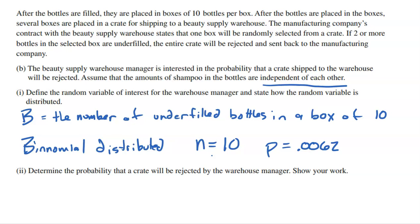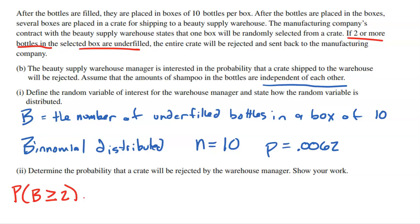Now we determine the probability that a crate will be rejected, which requires P(B ≥ 2). That means finding the probability of 2, 3, 4, 5, 6, 7, 8, 9, or 10 underfilled bottles and adding them all together — which is a lot of work. Instead, we'll use the complement.